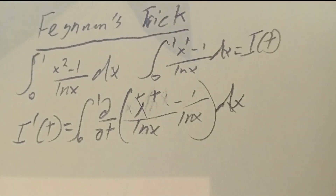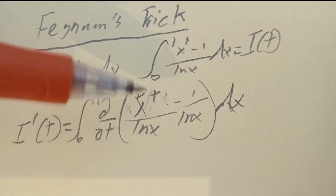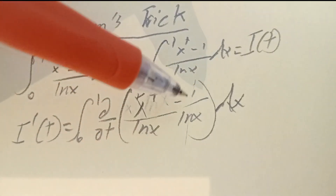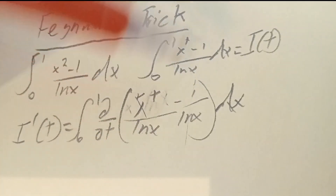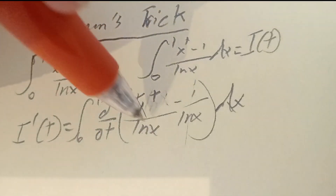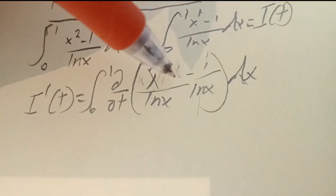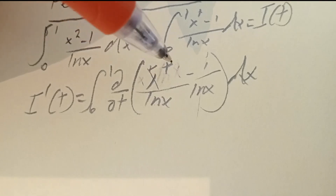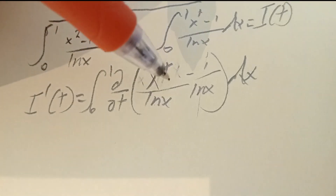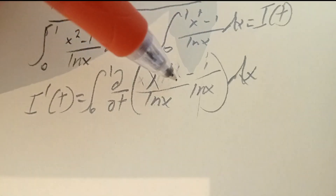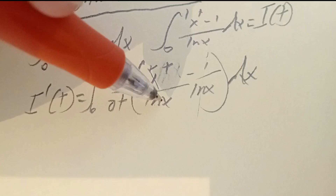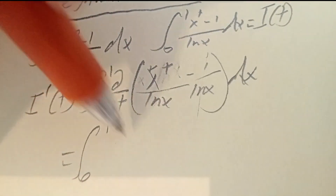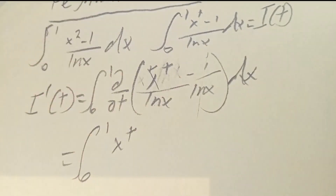We're taking the partial derivative of the integrand. The constant term goes to 0. For the x to the t term, since it's an exponential function in t, we get x to the t times ln x. That cancels out with the ln x in the denominator, leaving us with x to the t.